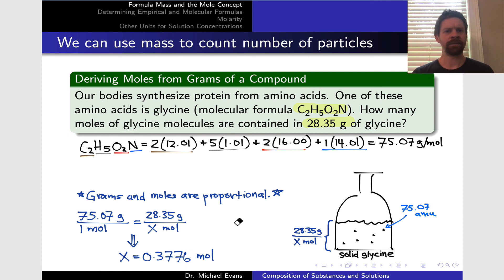Another way to do this that's a bit quicker is to multiply the given mass by the reciprocal of the molar mass. So 28.35 grams times one mole for every 75.07 grams of glycine gives us the same number of moles. The math is exactly the same. I like the proportionality process shown earlier because it correlates strongly with the physical situation and points us to the molar mass as the key proportionality constant that allows us to solve this problem.